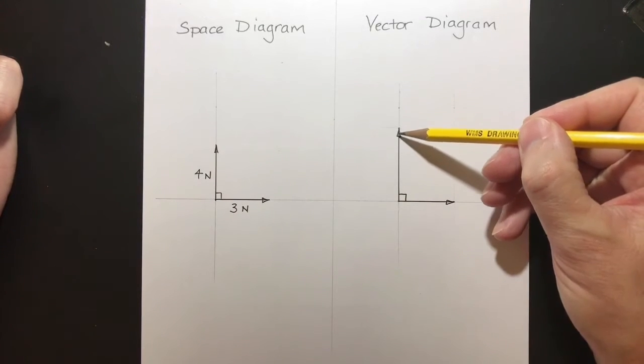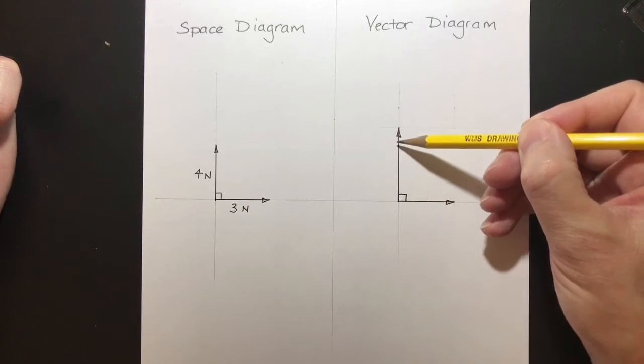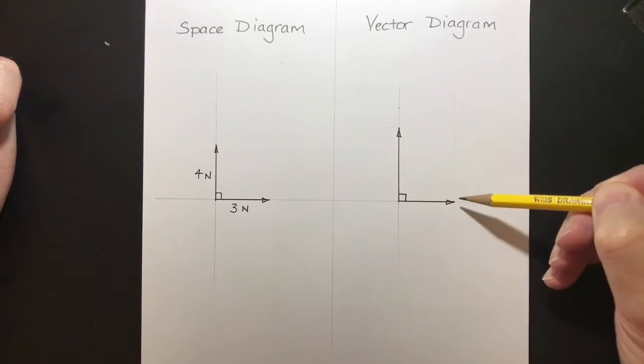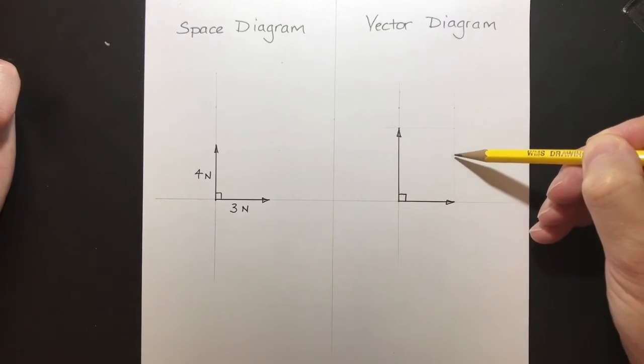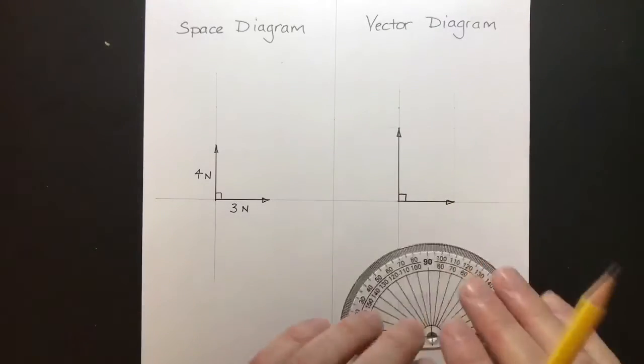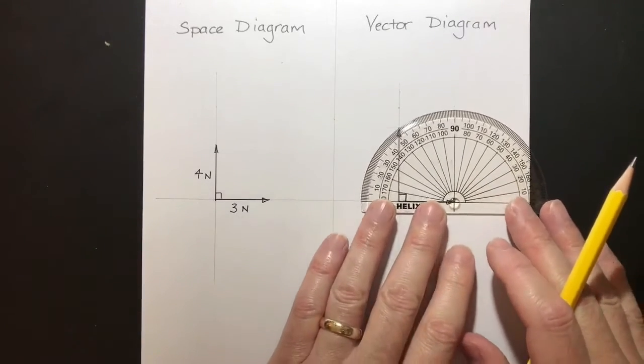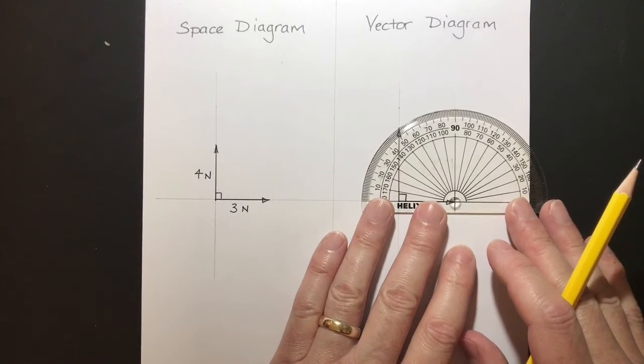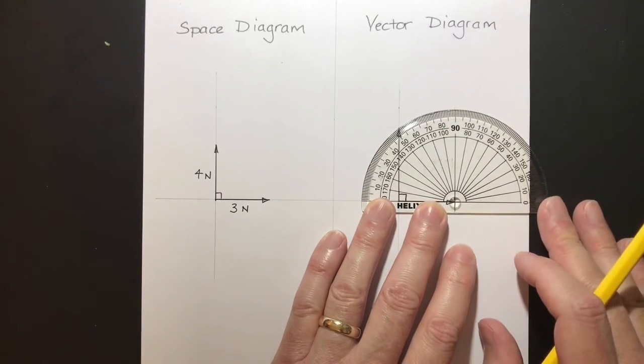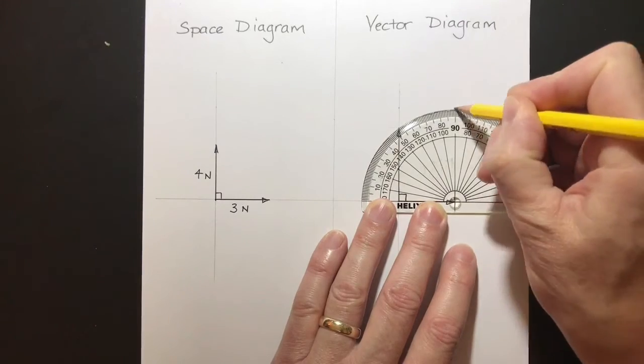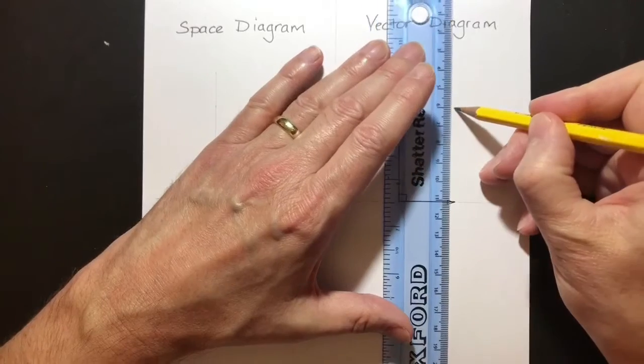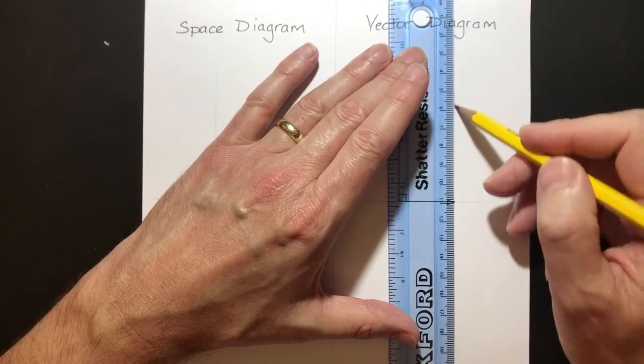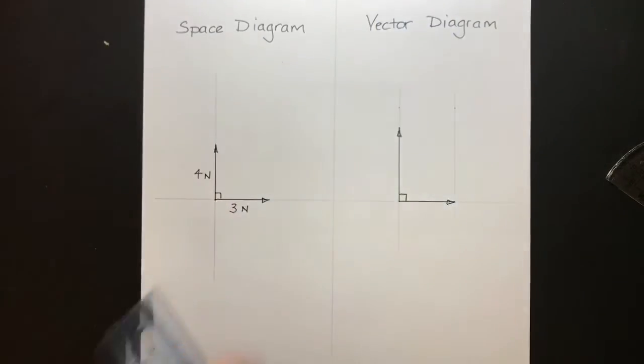So if I take this vector here and I draw a line parallel to that from here, I know that line is going to be going up at 90 degrees. So put my protractor on the end of the 3 Newton vector, line it up carefully. And I put a mark at the top there. Again, I draw a very faint line down to that first vector.